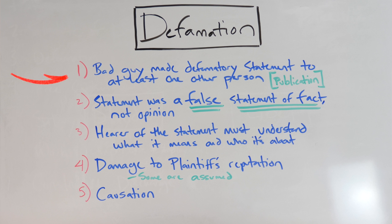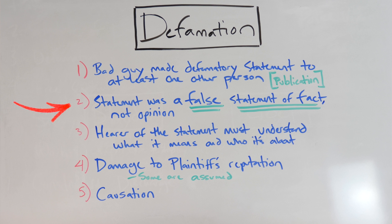Before we get into the specifics of what slander and libel are, let's first get an idea of what defamation is according to California law. Defamation typically consists of five different elements. Number one: the bad guy made the defamatory statement — the false statement — to at least one other person, meaning they didn't just say the false thing to the victim; they actually published it to somebody else. Two: the statement was a false statement of fact, not opinion. This is super important.